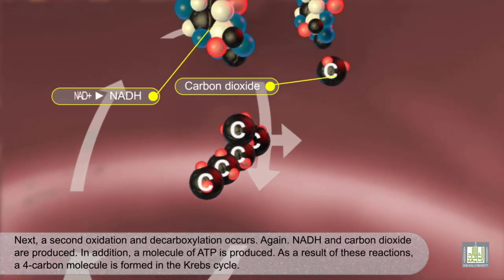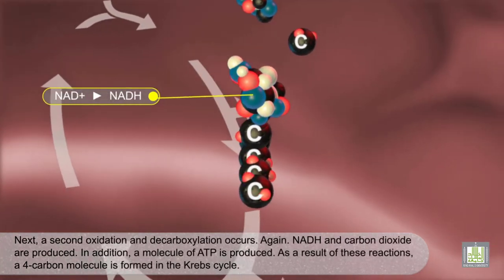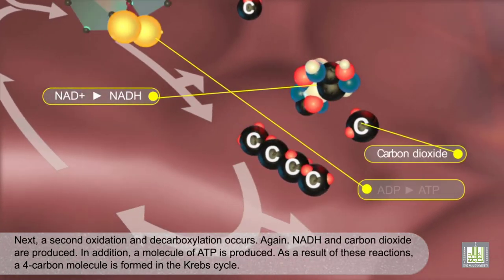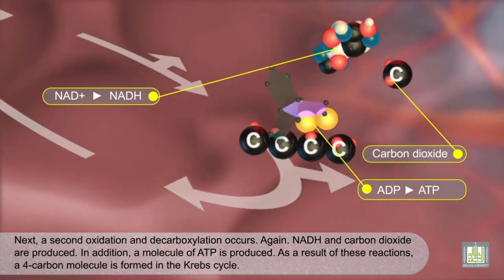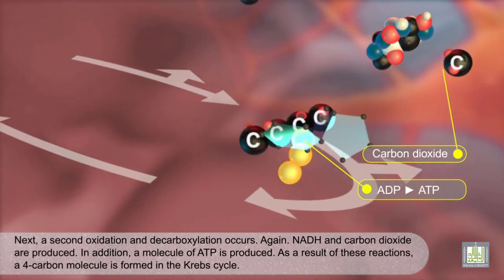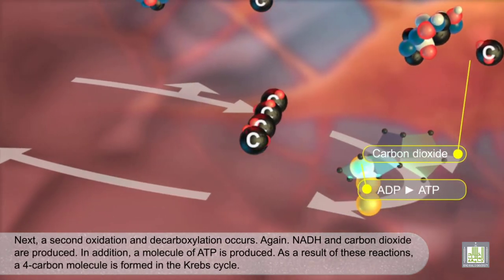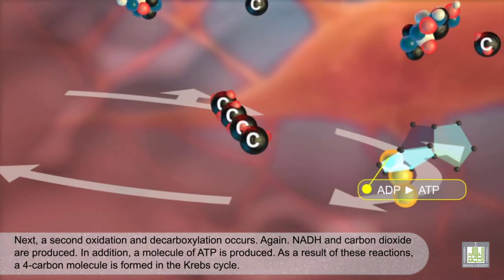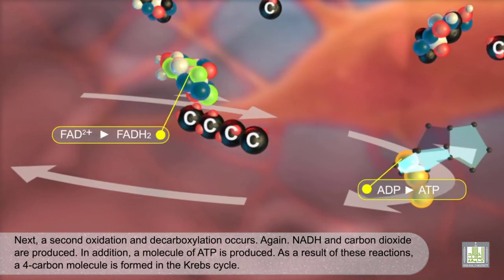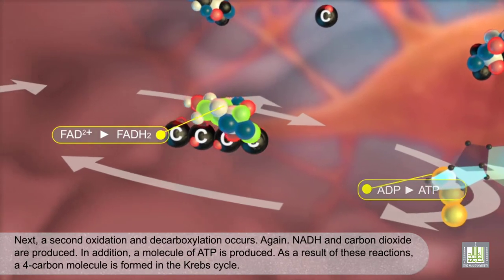Next, a second oxidation and decarboxylation occurs. Again, NADH and carbon dioxide are produced. In addition, a molecule of ATP is produced. As a result of these reactions, a four-carbon molecule is formed in the Krebs cycle.